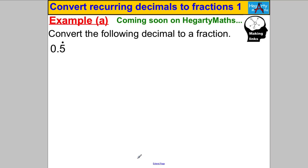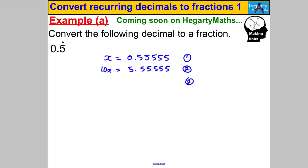Now try the same method on 0.5 recurring. Let X = 0.5555..., multiply both sides by 10 so 10X = 5.5555... Call them equations (1) and (2), subtract: 10X minus 1X gives 9X, and 5.5555... minus 0.5555... eliminates the recurring part, leaving 9X = 5. Therefore X = 5/9, so 0.5 recurring equals 5 ninths.